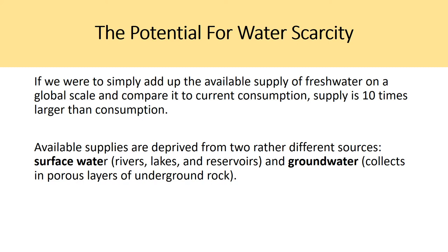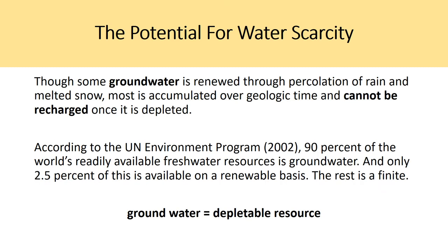Available supplies are derived from two rather different sources: surface water, which includes rivers, lakes, and reservoirs, and groundwater, which collects in porous layers of underground rock — that's the water table. Though some groundwater is renewed through percolation of rain and melted snow, most is accumulated over geologic time and cannot be recharged once depleted. According to the UN Environment Programme in 2002, 90% of the world's readily available freshwater is groundwater, and only 2.5% of this is available on a renewable basis. The rest is a finite resource. Therefore, groundwater is actually a depletable resource, not a renewable resource.